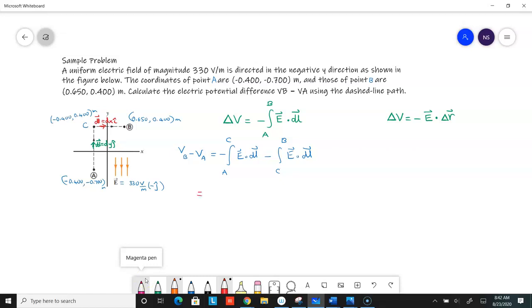With that, I can write this down as negative integral A to C. E is a negative 330 J hat volts per meter dotted with a DL, which is DY times J hat. Minus, you have integral C to B, and your E is negative 330 J hat dotted with DL, which is DX times I hat. This ends up being minus of minus, that's plus, and J hat dot J hat gives me 1, and J hat dot I hat gives me 0.